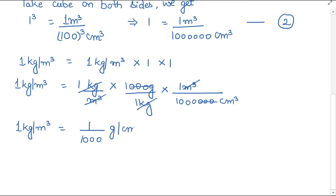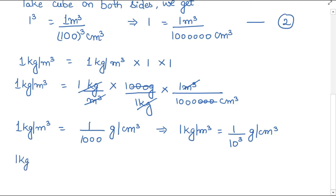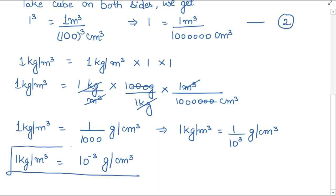So 1 kg per meter cube equals 1 / 10³ gram per centimeter cube. Since 10³ is in the denominator, bringing it to the numerator gives a negative power. Therefore, 1 kg per meter cube equals 10 raise to power minus 3 gram per centimeter cube. This is how we convert the unit of density from SI to CGS.